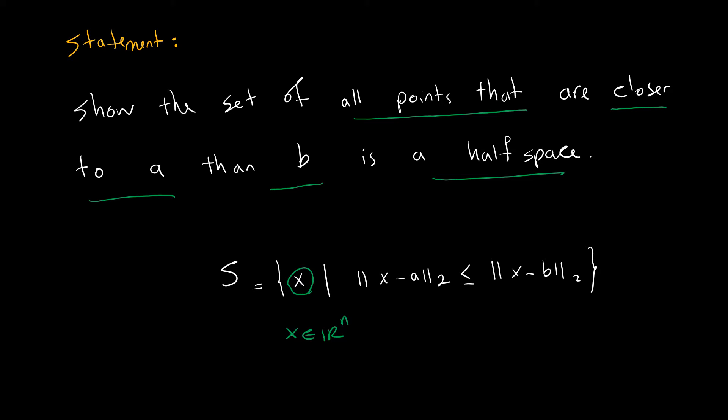...the distance between all points and a and the distance between all points and b. We want points that are closer to a, that means the distance between points to a is smaller than the distance between points to b. That is our set and we want to show this set is a halfspace.